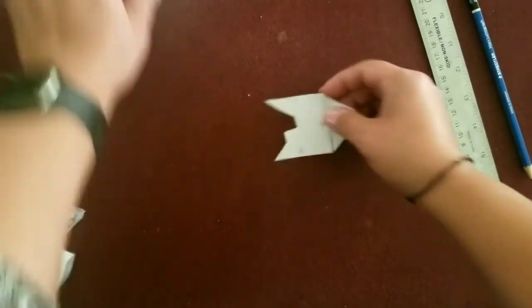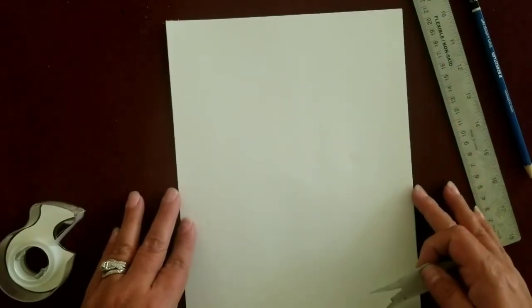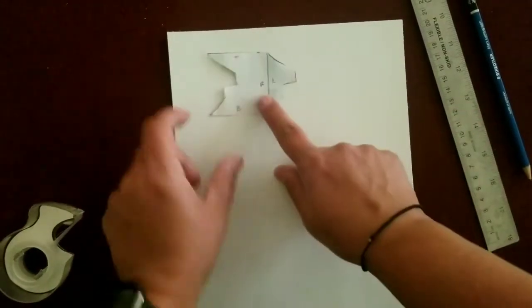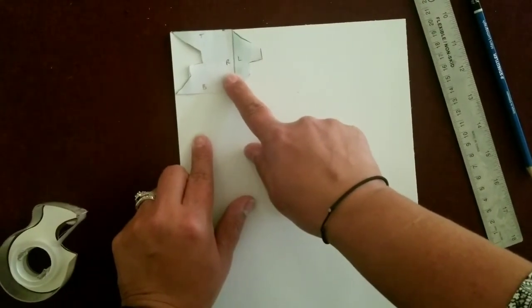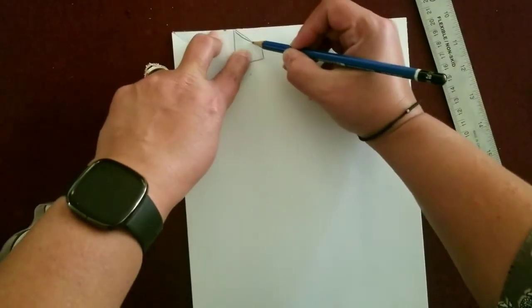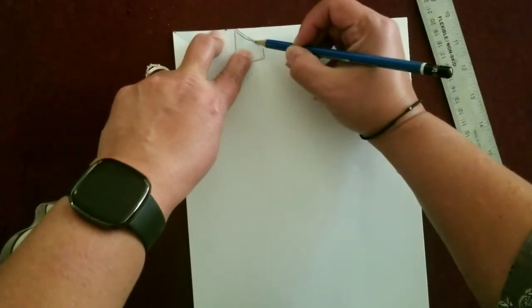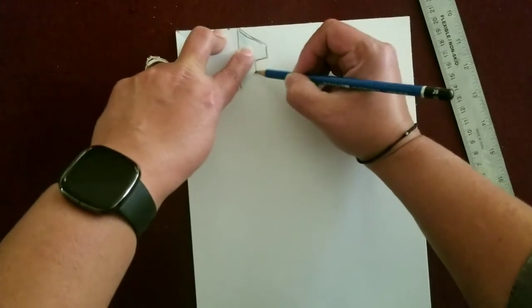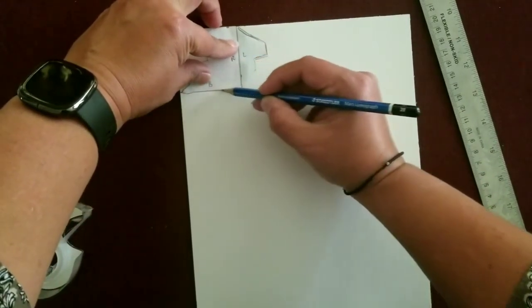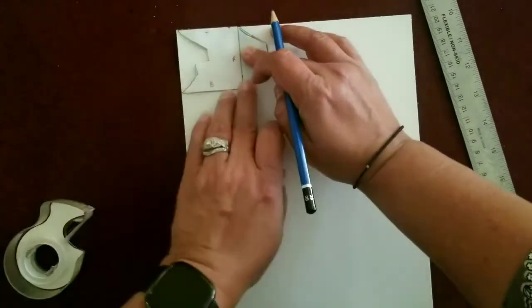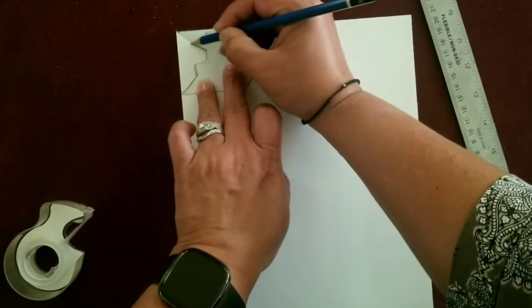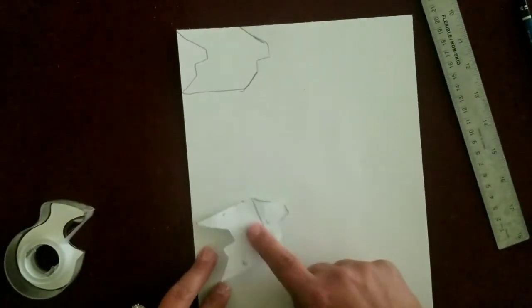So now what you'll do is take your paper that you're going to be drawing your tessellation on, and all you have to do is line up your little paper to the edge and trace. Be careful tracing. You're just going to trace your shape exactly the way it is. Now that I've traced it once...